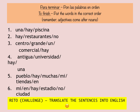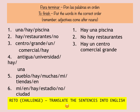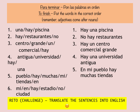Let's go through the answers. Number one: hay una piscina — there is a swimming pool. Number two: no hay restaurantes — there are no restaurants. Number three: hay un centro comercial grande — there's a big shopping centre. Number four: hay una universidad antigua — there is an old university. Number five: en mi pueblo hay muchas tiendas — in my town there are lots of shops. Number six: en mi ciudad no hay estadio — in my city there is no stadium. Well done if you got them all right, and well done if you got most of them right. If you found it really difficult, go back and review what we've learnt this lesson.